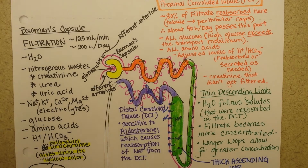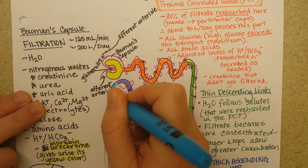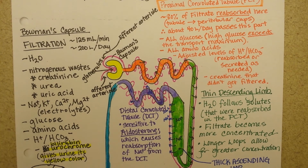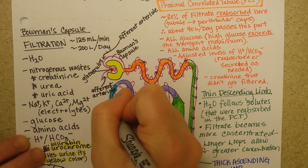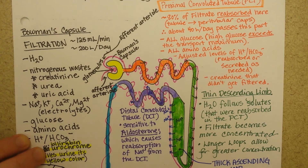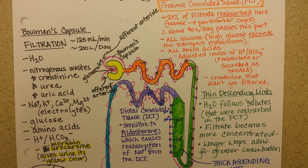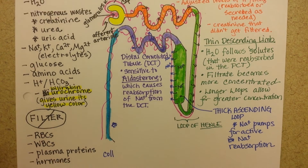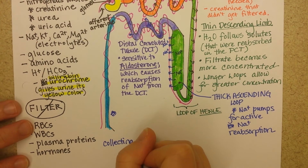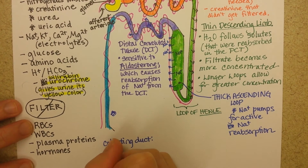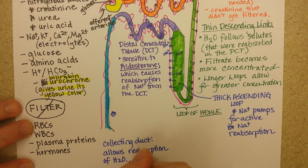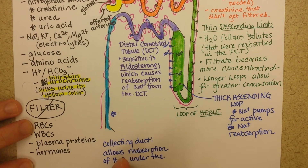The most elegant part of this is in the collecting duct — this is the last gasp at concentrating the urine. Let's put the peritubular capillaries around there. The collecting duct allows reabsorption of water under the influence of another hormone called antidiuretic hormone, or ADH.